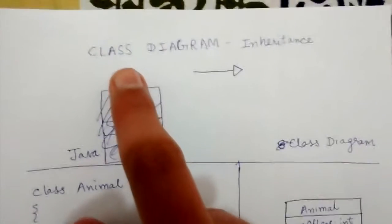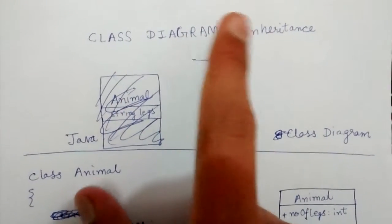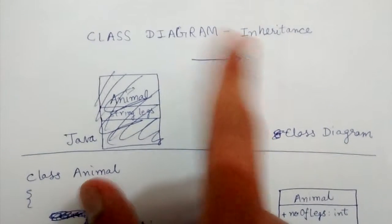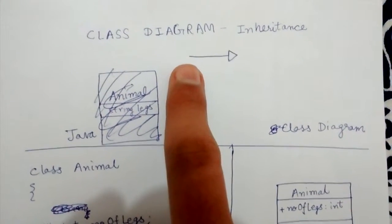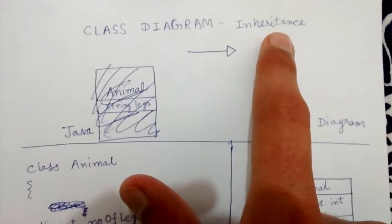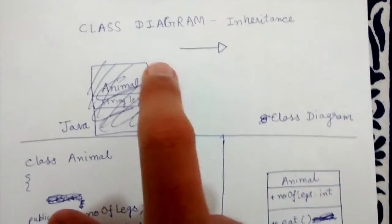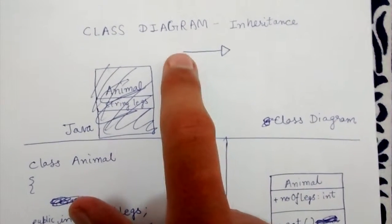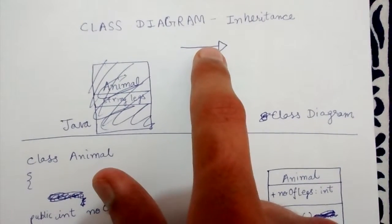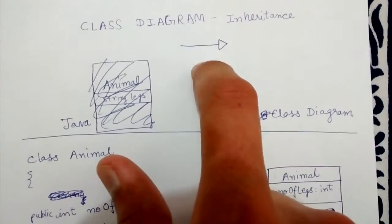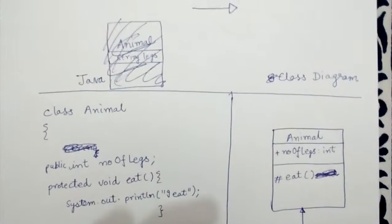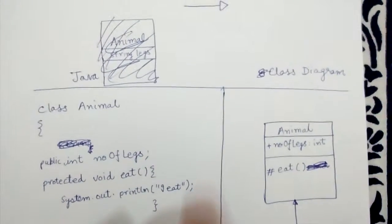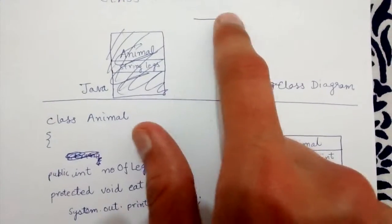Now we will look at the representation of inheritance in a UML class diagram. Inheritance relationships between two classes are represented by an arrow - a straight line with a triangle. The direction of this arrow is very important.